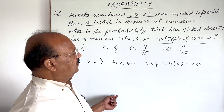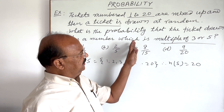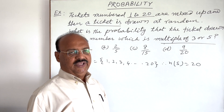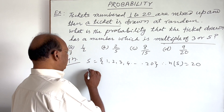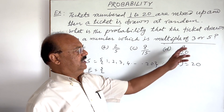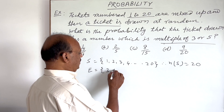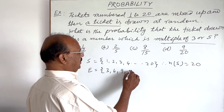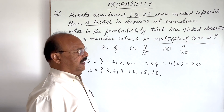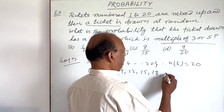One ticket has been drawn and we have to find the probability that the ticket number is a multiple of 3 or 5. So the event consists of numbers that are multiples of 3 or 5. Multiples of 3 from 1 to 20 are: 3, 6, 9, 12, 15, and 18.